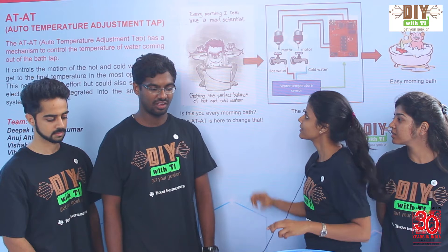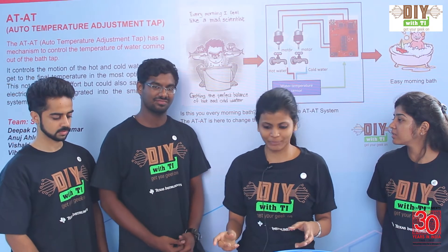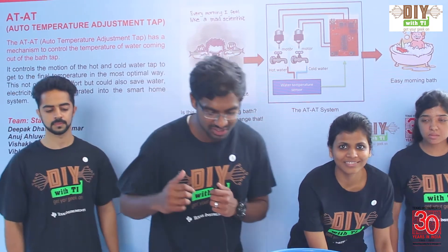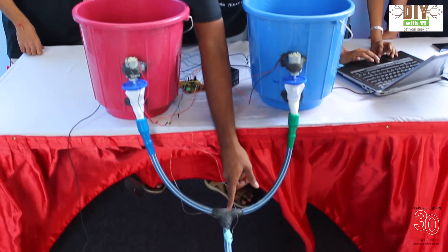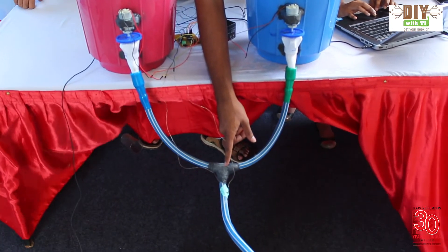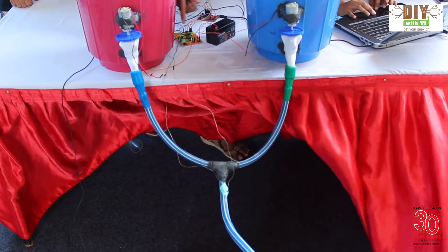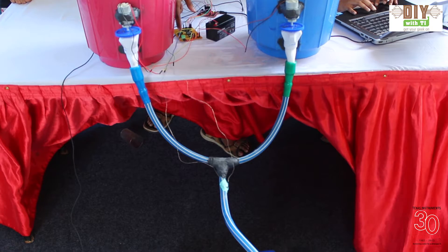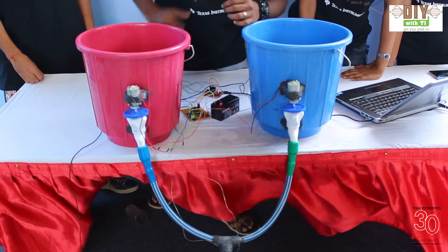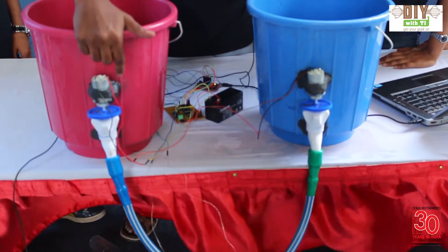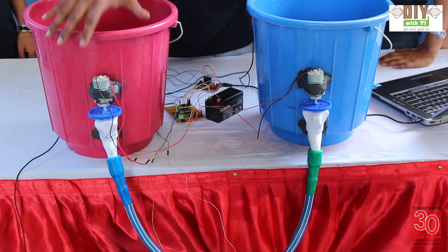On our system we have a thermistor over here — this is what will read the temperature value. This thermistor is connected back onto the system. The thermistor needs to be calibrated at the start, and now you can see the motor starts rotating.